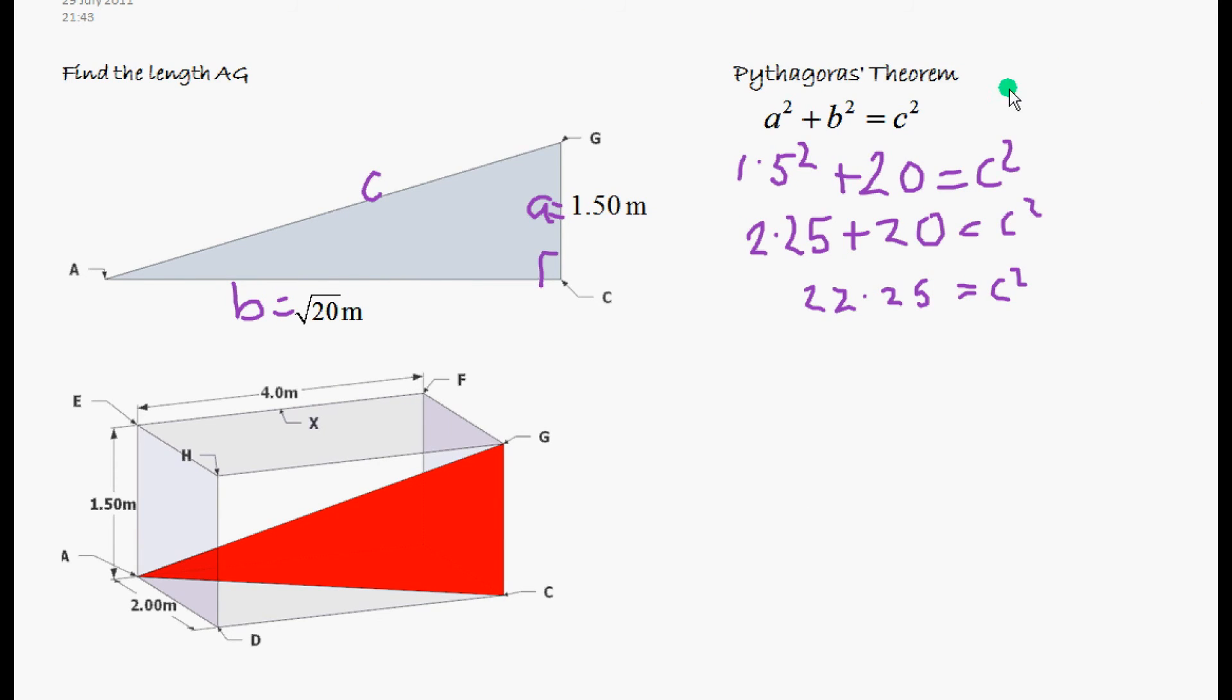So our final answer is 4.72. And that is our length of A, G to 3SF.